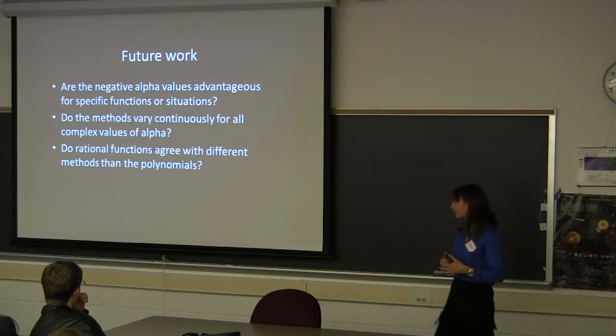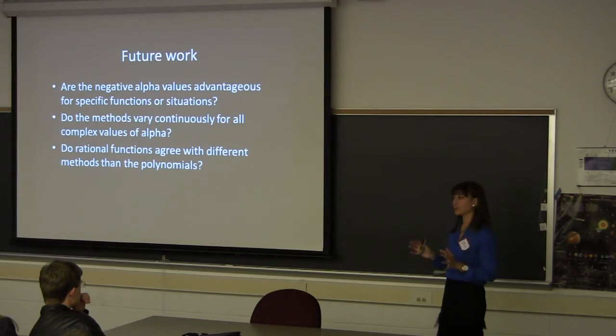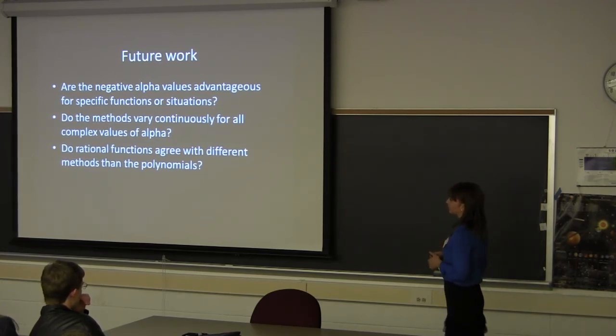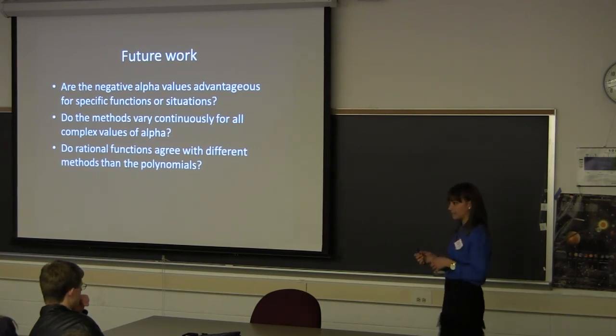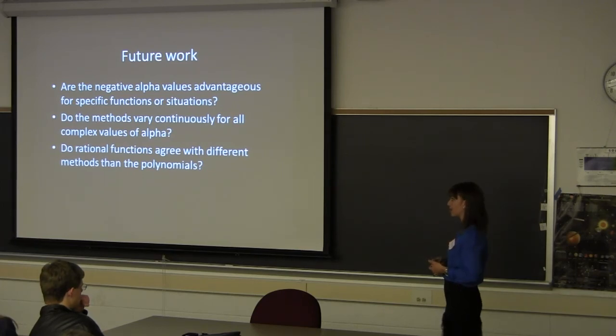Some things we want to work with for the future with this program. One question we have is, are these negative alpha values advantageous for specific functions or situations? We found in some cases, using negative alpha values, you get real numbers along the way for each iteration. So, that's nice if you don't have your TI-89 in your back pocket. Another question we have is, do the methods vary continuously for all complex values of alpha? We did a little bit of work with complex values for alpha. I wish we could have done more because you got some really cool images with that. However, unlike with real values, we're getting discontinuity, which was kind of worrisome. Finally, do rational functions agree with different methods than polynomials. In all the examples, I did polynomials because they're easy to see and the roots are easy to find. But it also works with rational functions and in the final program, you could plug in rational functions as well. So, that would be something to look into.